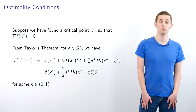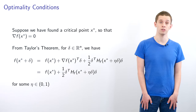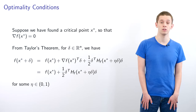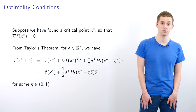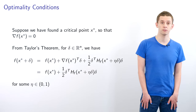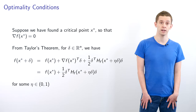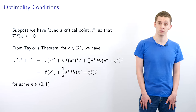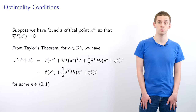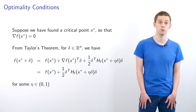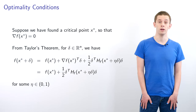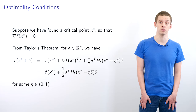Suppose we found a critical point x* so that ∇f(x*) = 0. Then from Taylor's theorem, f(x* + δ) = f(x*) + ∇f(x*)^T δ + ½ δ^T Hf(x* + ηδ) δ. Since the gradient term vanishes, this simplifies to f(x*) + ½ δ^T Hf(x* + ηδ) δ, where η is a value between zero and one.